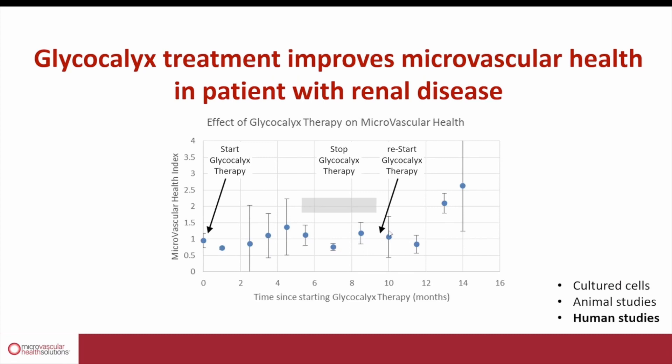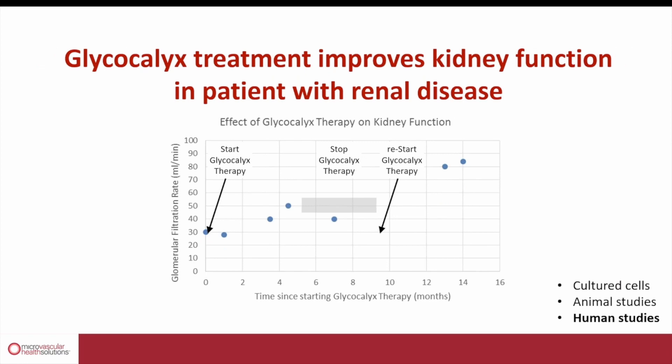Then the second time this individual started taking Endocalyx again. Within about three months, there was a further significant increase of his microvascular score from 2.5 up to 3 after the second course of Endocalyx. Similarly, we did follow the kidney function in this individual.